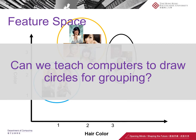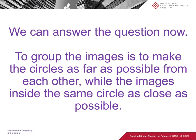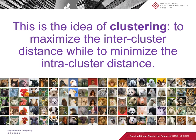Now we can answer that question. To group the images, it's actually to make the circles as far as possible from each other, because each circle is a group. We need groups to be as far as possible from each other inside the feature space. At the same time, we need images inside the same circle to be as close as possible to each other, because they are supposed to be similar. This is, in fact, the idea of clustering.